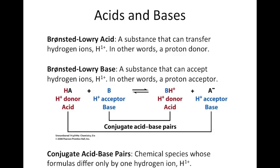The second definition of an acid and base — and this is the definition we're going to use throughout this chapter — is what's called a Bronsted-Lowry acid and a Bronsted-Lowry base. A Bronsted-Lowry acid is a substance that when put into water donates or transfers a proton or an H⁺ ion to another substance. A Bronsted-Lowry base is a substance that accepts a hydrogen ion from another molecule.